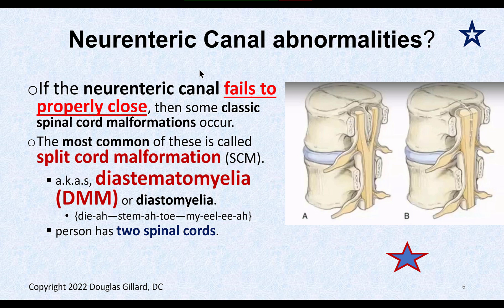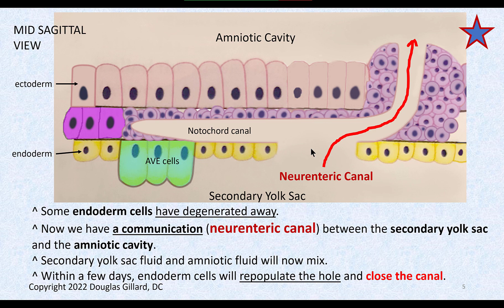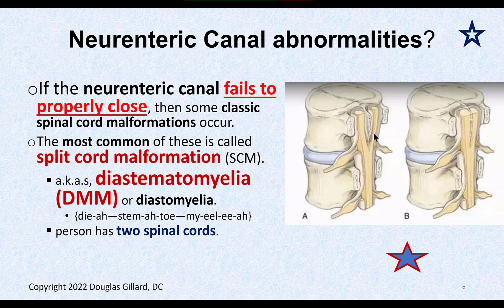This canal is really important in the formation of the spinal cord. If this canal does not reform, or if the endoderm doesn't reform and the neuroenteric canal doesn't close, you can get nasty deformities. One of them is a split spinal cord — some people are born with two spinal cords, which is not a good setup. All kinds of problems result. This condition is called diastematomyelia.